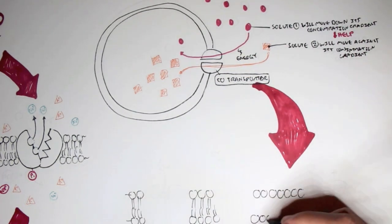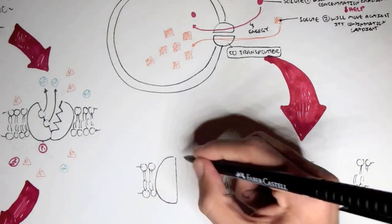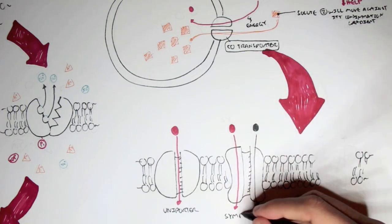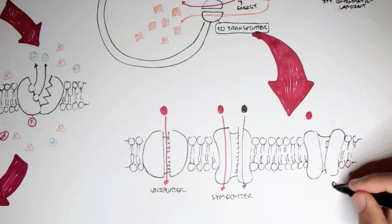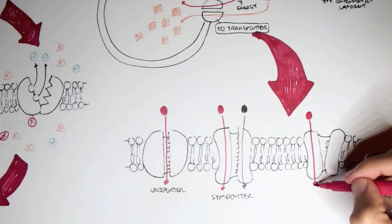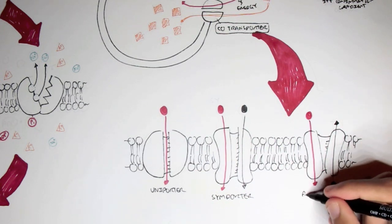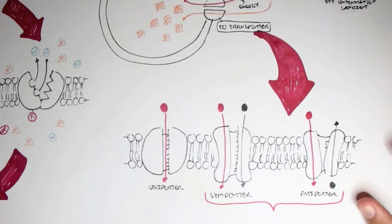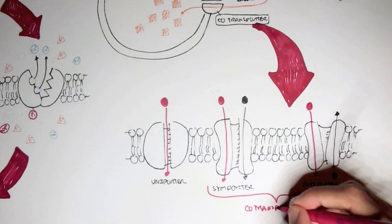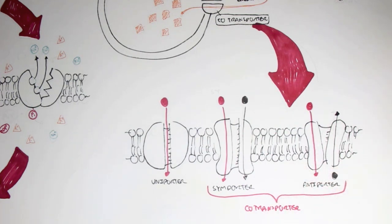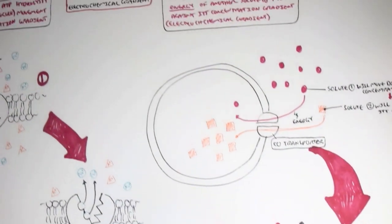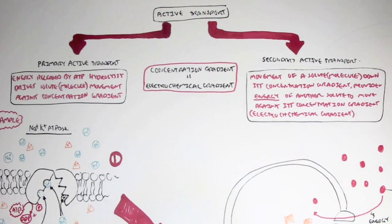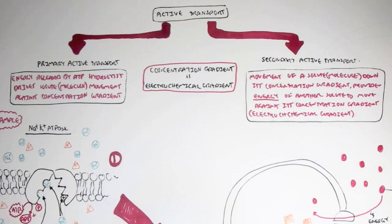The protein transporter is a co-transporter. A basic protein transporter moves one type of solute up or down its concentration gradient. A symporter moves two or more molecules in the same direction, while an antiporter moves two or more molecules in opposite directions. Symporters and antiporters are both co-transporters. An example of a co-transporter will be covered in a future video on the respiratory system, as red blood cells use a co-transporter to deliver oxygen and carbon dioxide between the lungs and tissues.